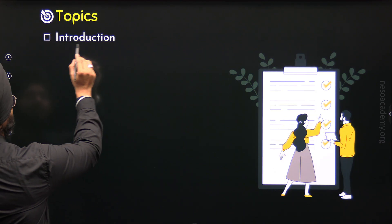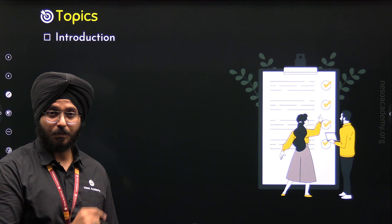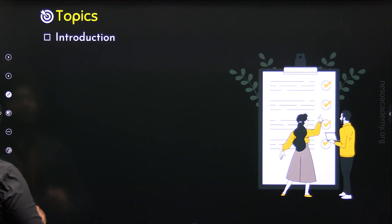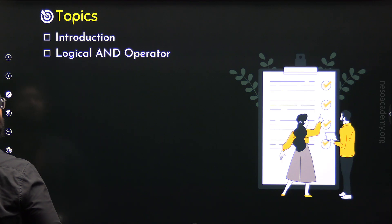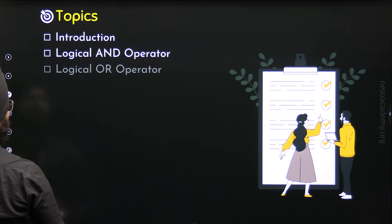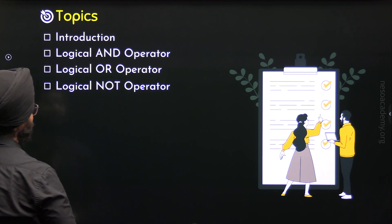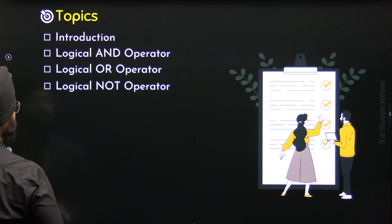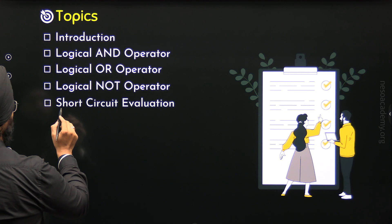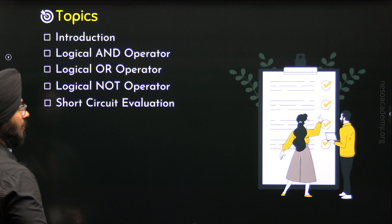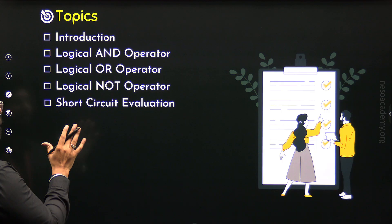The first topic is Introduction to Logical Operators. Then we will move to the next topic where we will understand the logical AND operator. After understanding the logical AND operator, we will understand the logical OR operator and logical NOT operator. After completion of these topics, we will move to the last topic of this lecture, where we will understand short-circuit evaluation of logical operators.